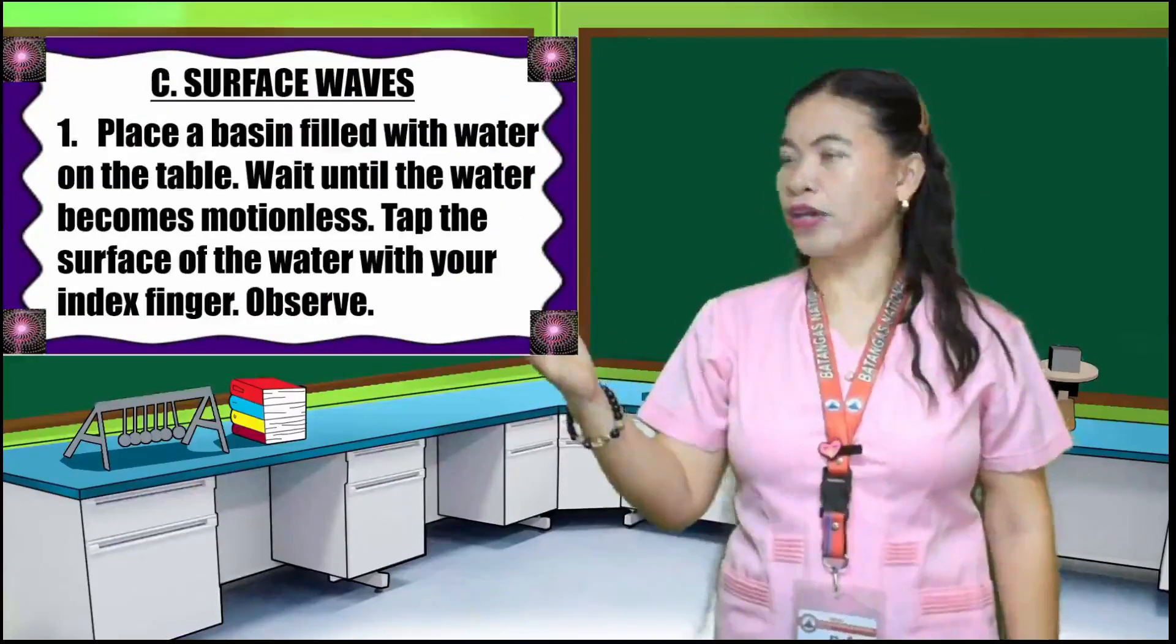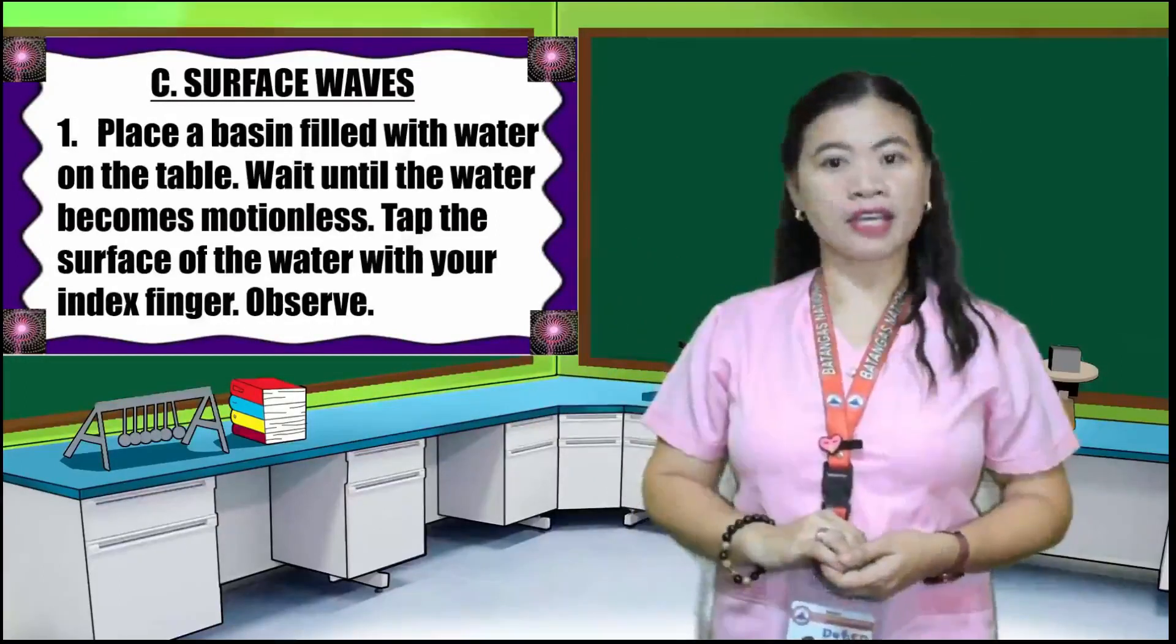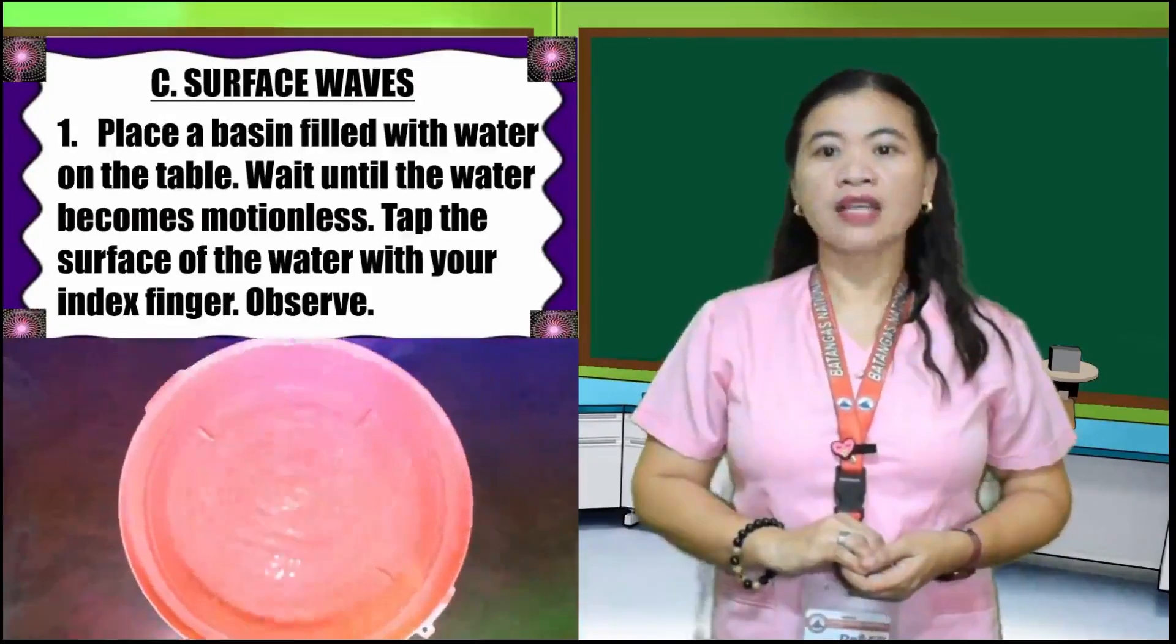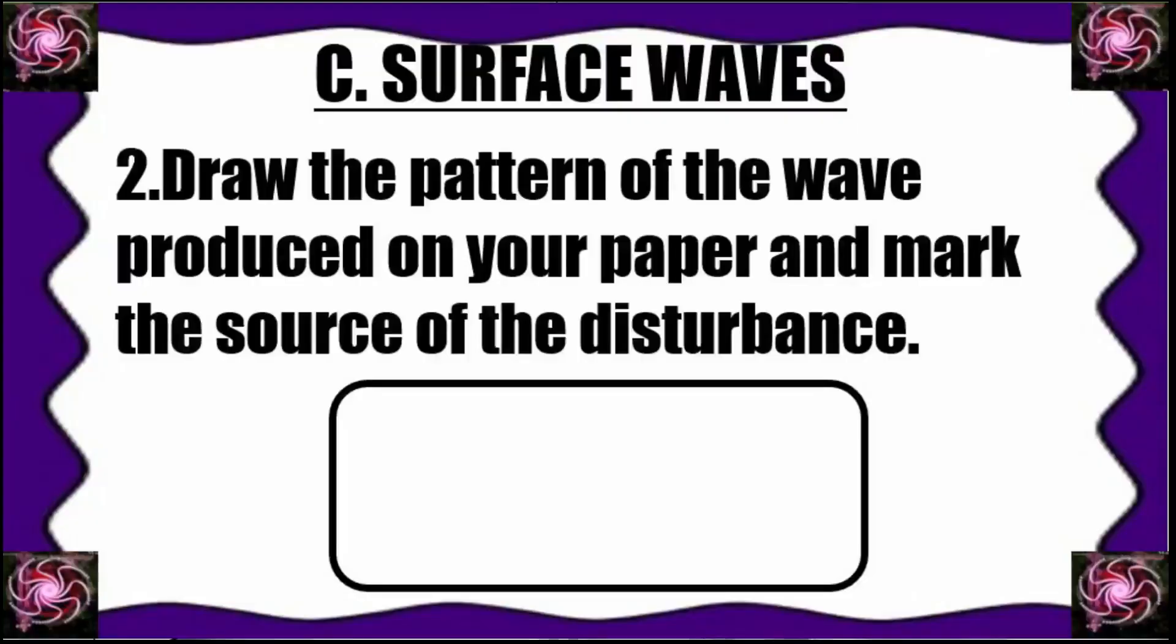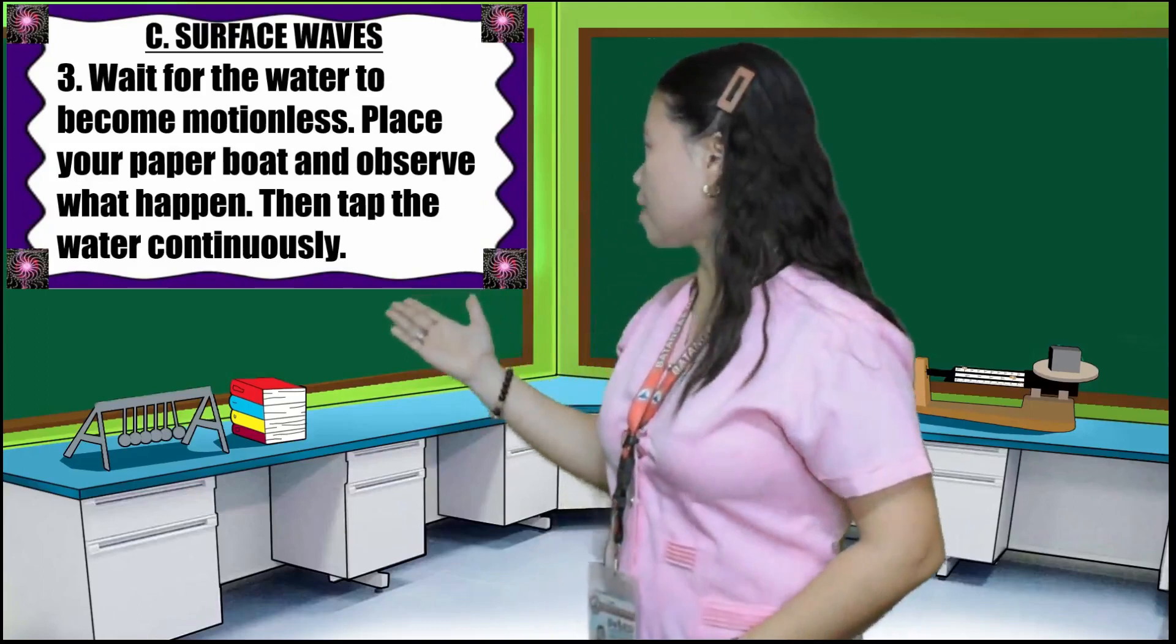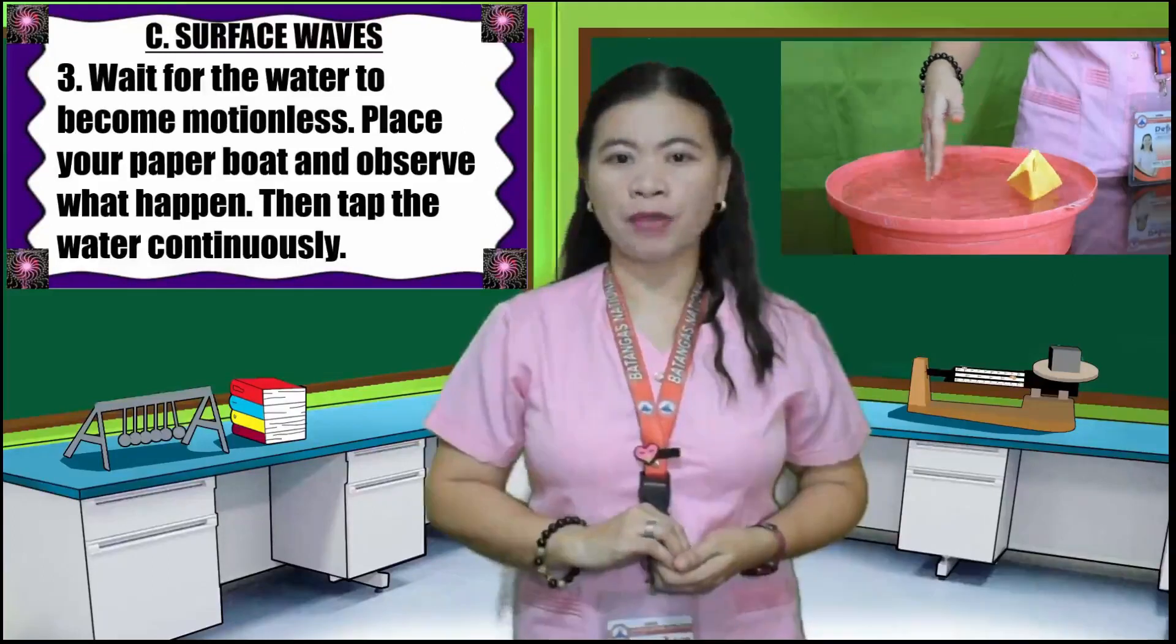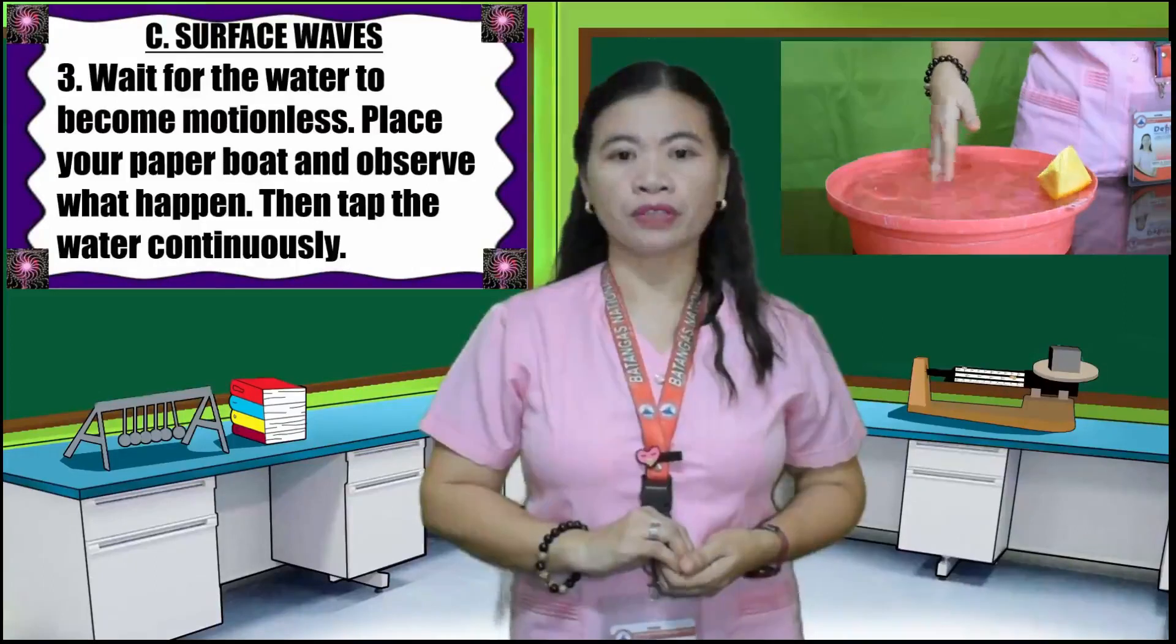For letter C, surface waves. Number one, place basin filled with water on the table. Wait until the water becomes motionless. Tap the surface of the water with your index finger. Observe. Number two, draw the pattern of the wave produced on your paper and mark the source of the disturbance. Number three, wait for the water to become motionless. Place your paper boat and observe what happened. Then tap the water continuously.